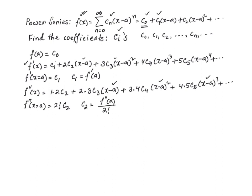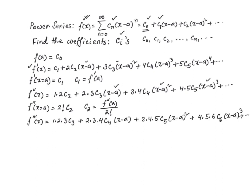Now the third derivative gives a certain expression. Evaluating at x equal to a, the remaining terms go away because a minus a is zero. We are left with three factorial times c three. So c sub three equals f triple prime of a divided by three factorial.